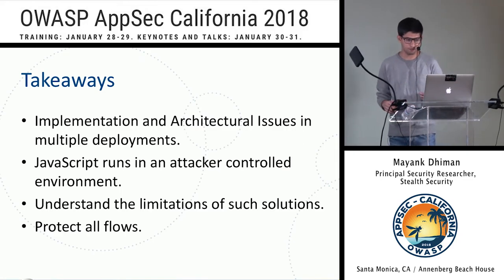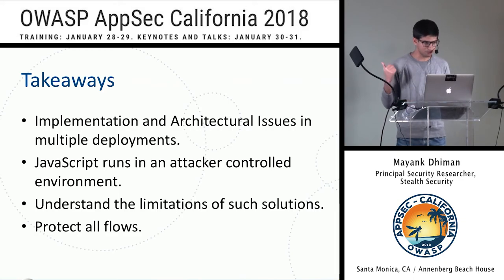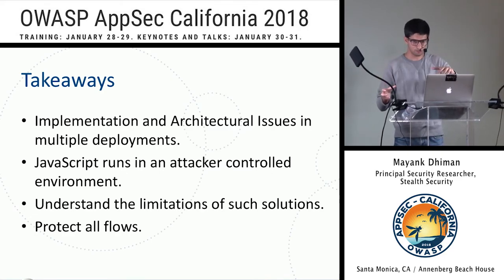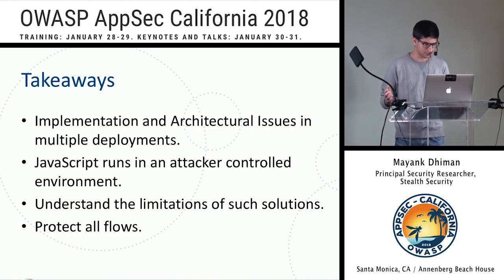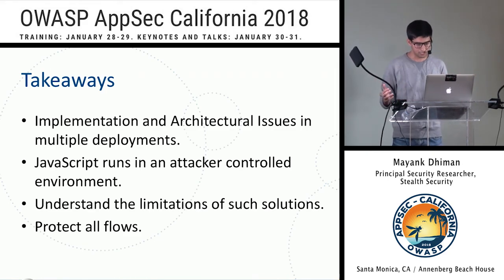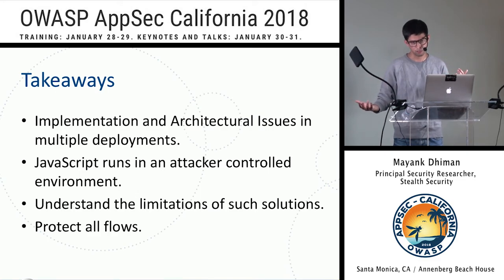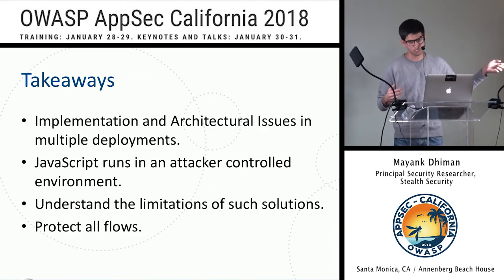Some takeaways: when I started looking at these solutions, I found many implementation and architectural issues. You should understand that JavaScript runs in an attacker-controlled environment — as an attacker, I can see exactly what you're looking for and forge all the signals you consume. If you're a data scientist consuming these signals, you can never fully trust them because all of them can be forged. You should understand the limitations — these solutions work in many scenarios but definitely not all. Finally, protect all flows: if you have fraud detection on your website, implement it on your mobile app as well, otherwise you're closing the front door while leaving the back door open.